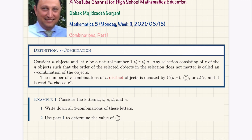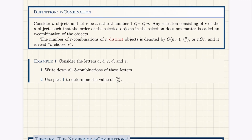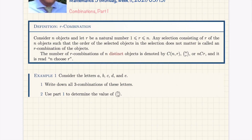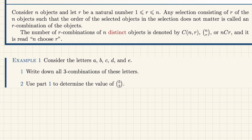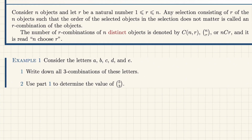Now let us start with examples. The point of this lesson is to find a formula for combinations — it is very simple and you can probably guess it. Consider the letters A, B, C, D, and E. Part 1: write down all 3-combinations of these letters. This means choosing three of them each time — there is no arrangement, you just choose. What is important is the combination of elements.